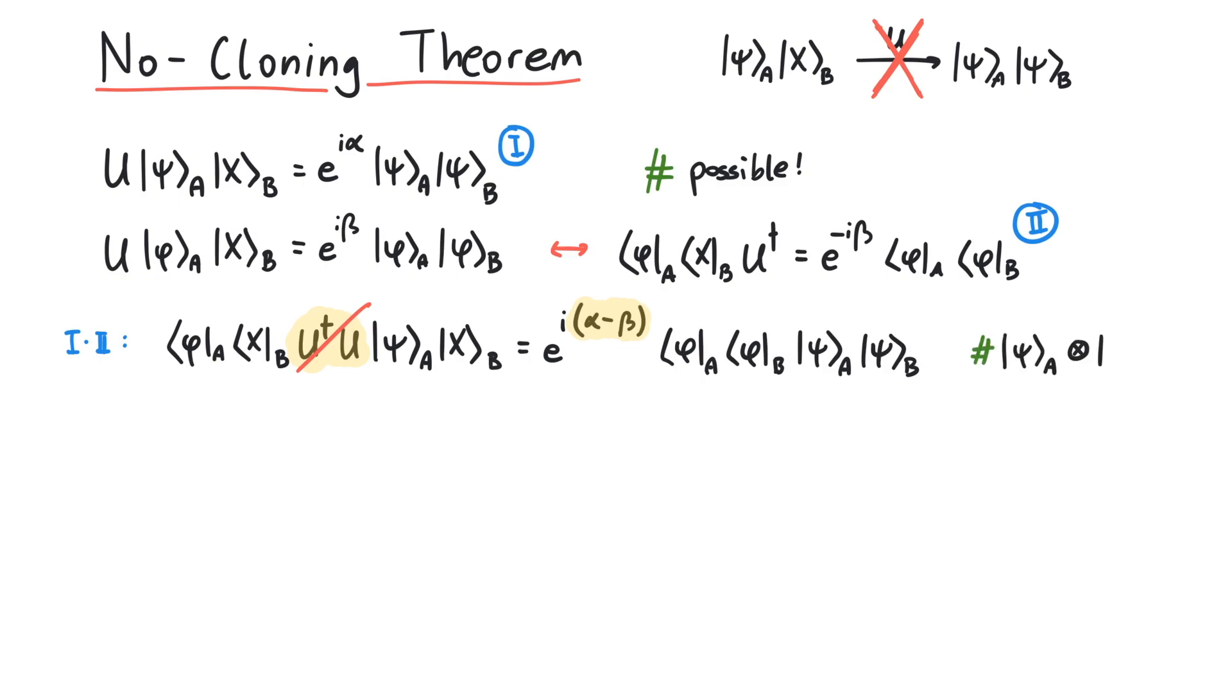Since the inner product is compatible with the tensor product, we can exchange terms from different subsystems until we have the inner product of phi and psi times the inner product of x with itself. And on the other side, we have the phase factor and the inner product of phi with psi twice.